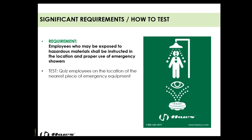Employees who might be exposed to hazardous materials must know where the emergency equipment is and how to use it — even employees who only occasionally visit a hazardous area. Emergency equipment generally activates the same way across the board, with a push flag and pull rod, but some equipment varies. Make sure employees understand how their specific equipment is activated and how to provide first aid as quickly as possible. Quiz employees on the location of the nearest piece of equipment and ask them to demonstrate activation without turning it on — nobody wants to go home soggy.